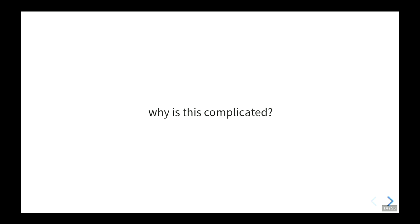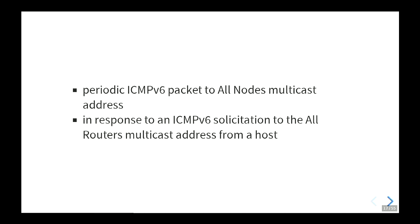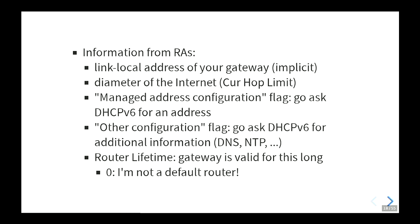Why is this stuff complicated? We basically need two addresses and the prefix length — two 128-bit numbers and an 8-bit number. Let's look at how this is implemented in router advertisements. Router advertisements are a periodic ICMPv6 packet sent to the all-nodes multicast address, or sent as a response to a solicitation sent by a host to the all-routers multicast address. Information you get from a router advertisement includes the link-local address of your gateway.